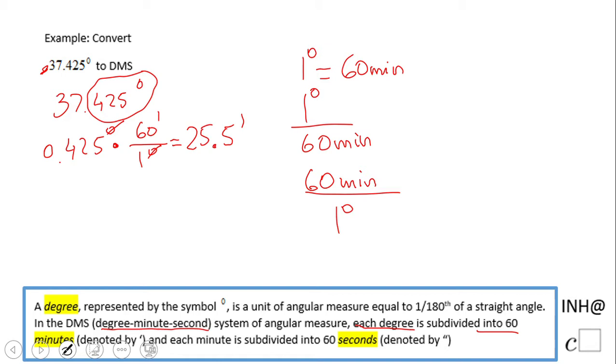So we have 37 degrees and 25.5 minutes. Now we want to change the 0.5 minutes into seconds. Be careful - this is not 5 seconds.